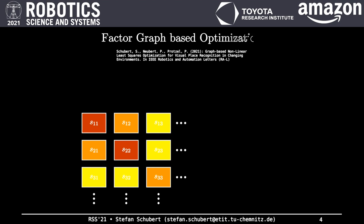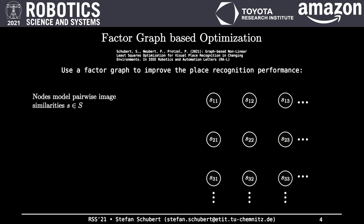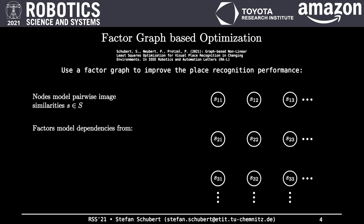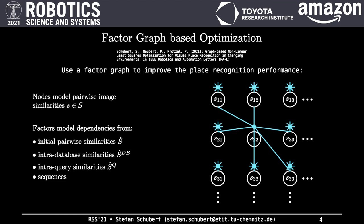In our recent work, we proposed a factor graph-based optimization of the similarity matrix for performance improvements. The nodes of the graph model the pairwise image similarities from the image similarity matrix. Factors in the graph model constraints and dependencies between nodes and allow the exploitation of different sources of additional knowledge, like the initial pairwise image similarities, intra-database similarities, intra-query similarities, spatial-temporal sequences in the database and query set, and potentially other kinds of additional knowledge that hasn't been considered yet, like odometry, or several sources of knowledge in combination.